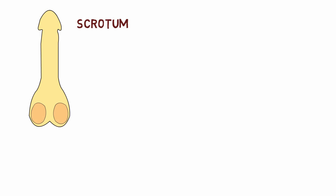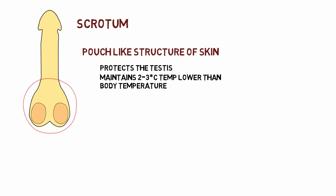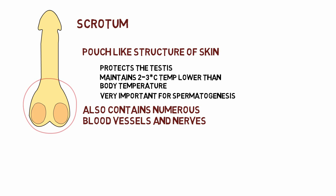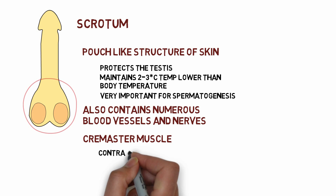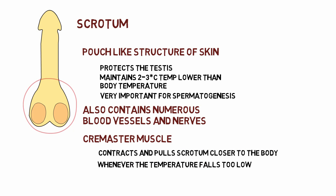The next external reproductive organ is the scrotum. The scrotum is a pouch-like structure made up of skin that has two main functions. It protects the testes and maintains a scrotal temperature that is two to three degrees Celsius lower than the body temperature, which is very important for the process of spermatogenesis. The scrotum also contains numerous blood vessels and nerves. The cremaster muscle present in the scrotum contracts and pulls the scrotum closer to the body whenever the outside temperature falls too low, thus maintaining a constant scrotal temperature.